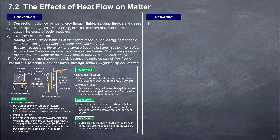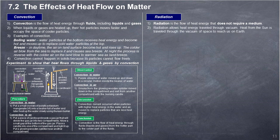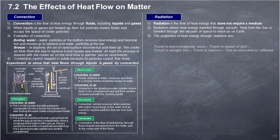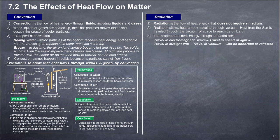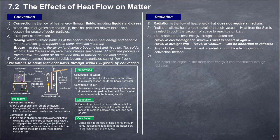Radiation is the flow of heat energy that does not require a medium. Radiation allows heat energy to travel through vacuum. Heat from the Sun travels through the vacuum of space to reach us on Earth. The properties of heat energy through radiation are: it travels as electromagnetic waves, at the speed of light, in a straight line, through vacuum, and can be absorbed or reflected. Any hot object can transmit heat in radiation form, besides conduction or convection. The hotter the object, the more heat energy it can transmit through radiation.